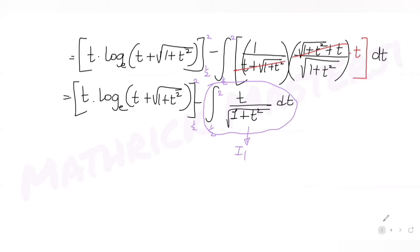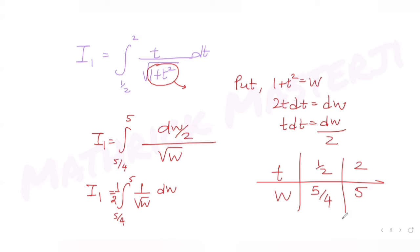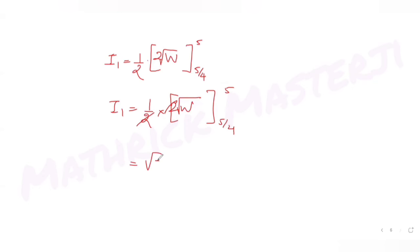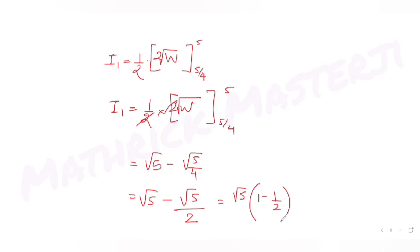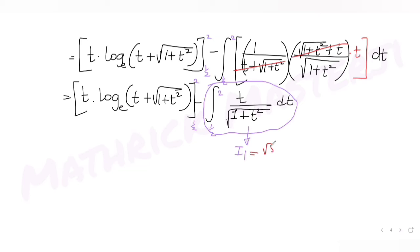Evaluating I₁: ∫w^(−1/2) dw = 2√w. So I₁ = (1/2) · [2√w] from 5/4 to 5 = [√w] from 5/4 to 5 = √5 − √(5/4) = √5 − √5/2 = √5(1 − 1/2) = √5/2.